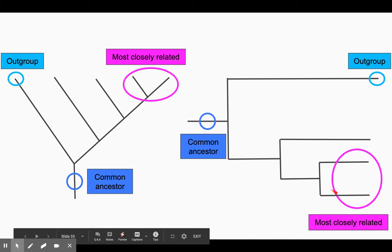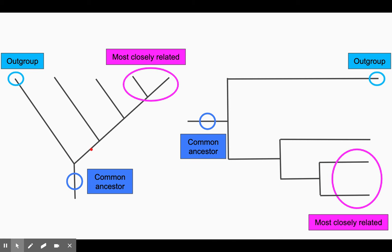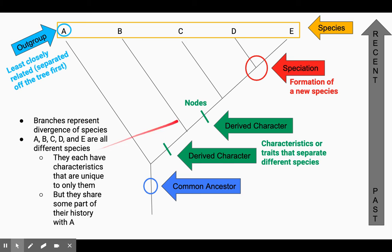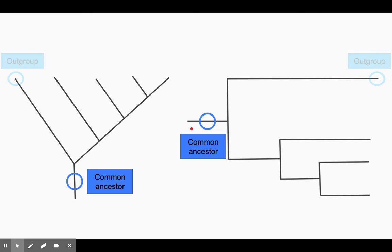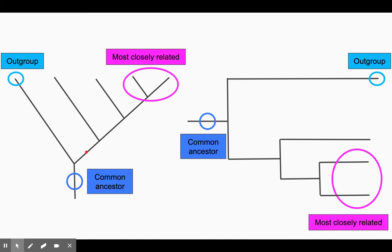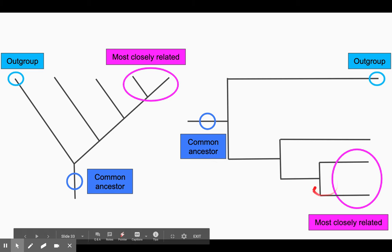They have the most traits in common. So this one might have in our previous example, it would have had maybe two traits in common, maybe here and here. This one might have had maybe one, two, three, however many it might have had. These two have the most in common because they've kind of followed the same path the entire time.